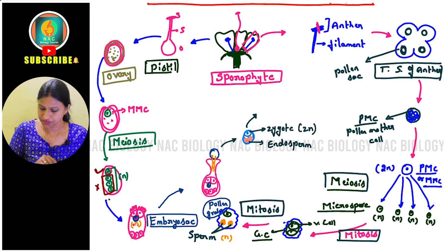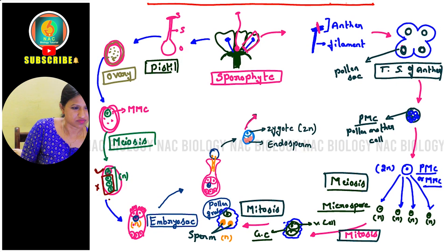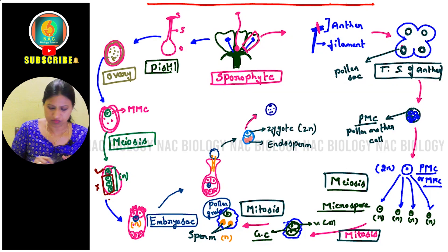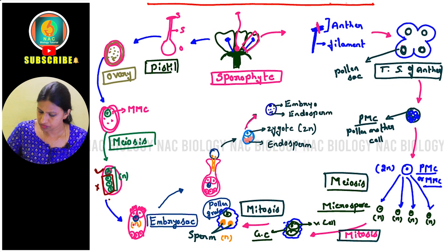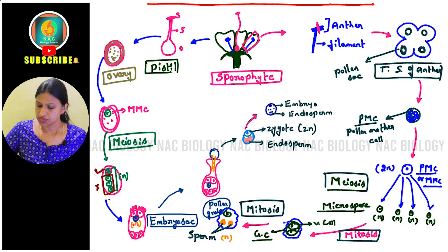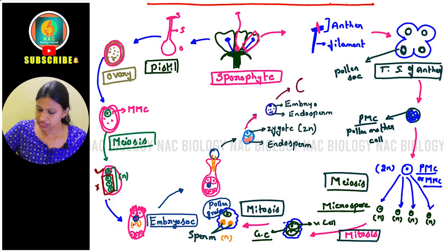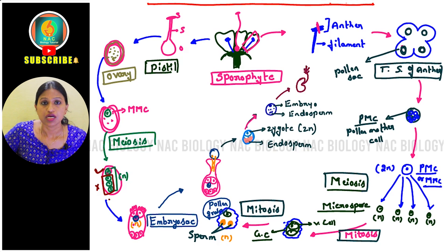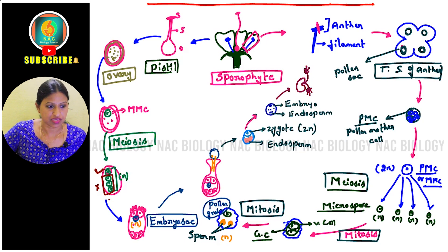The zygote (2n) finally gets converted into an embryo, and from the embryo we get the seed. This seed germinates into a seedling — the upper part is the epicotyl (shoot part) and the lower part is the hypocotyl (root part) — which further develops into a new sporophyte.